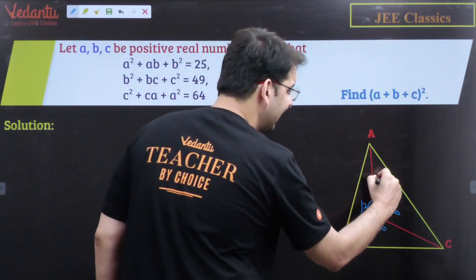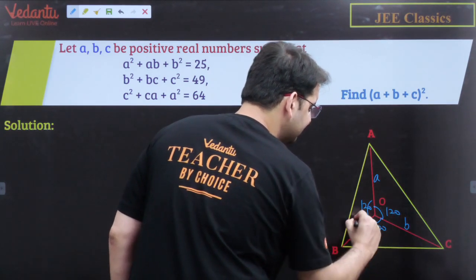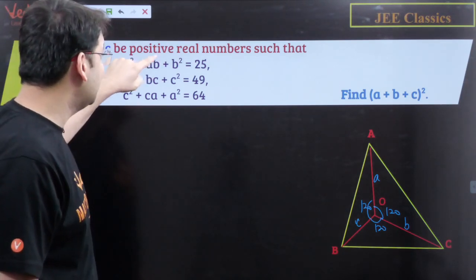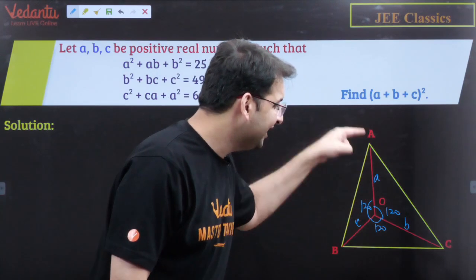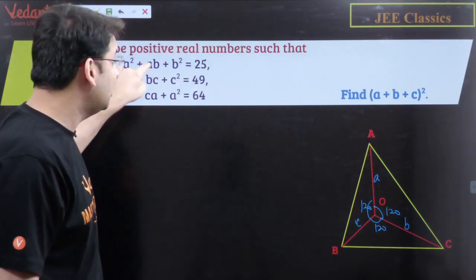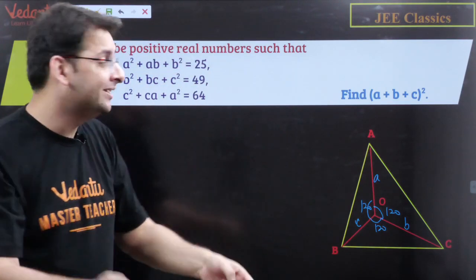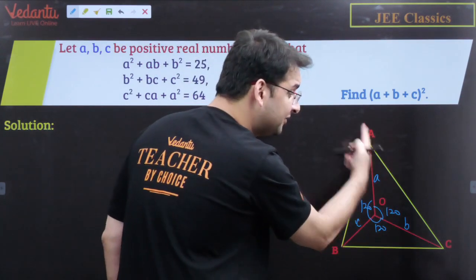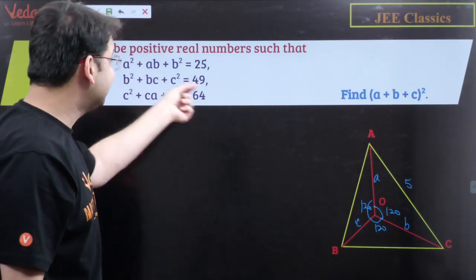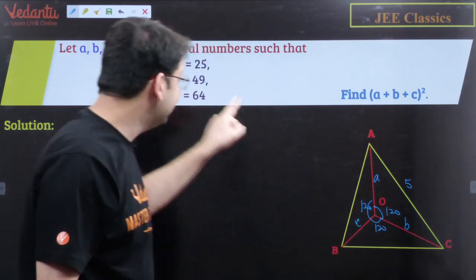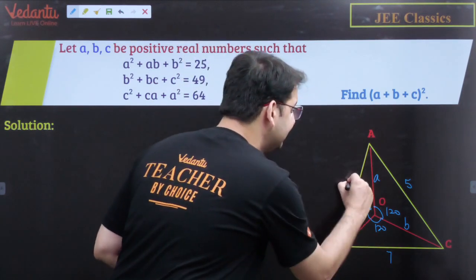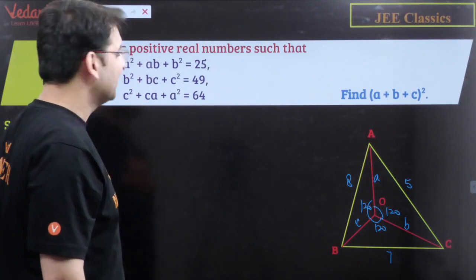Now, as per the question, A²+B²+AB = 25. Since angle AOB is 120°, by our lemma, A²+B²+AB is nothing but the square of the opposite side, so that side squared is 25, meaning that side length is 5. Similarly, B²+BC+C² = 49 gives the opposite side as 7. And C²+CA+A² = 64 gives the opposite side as 8. So we have a triangle with sides 5, 7, and 8.